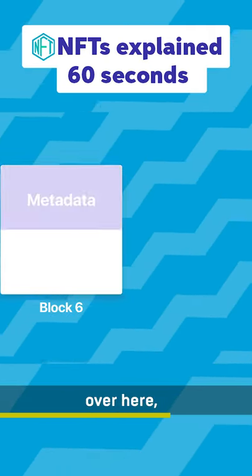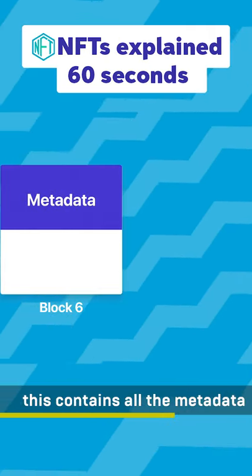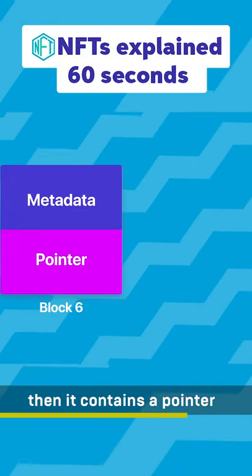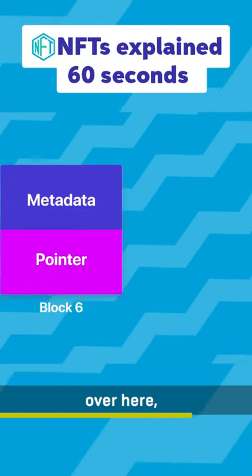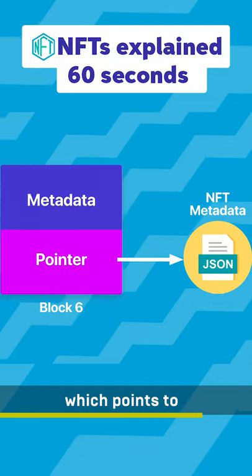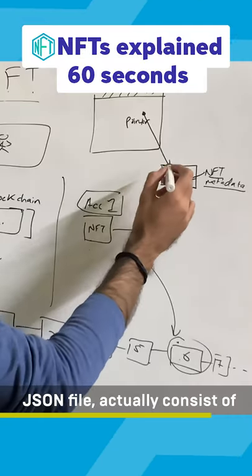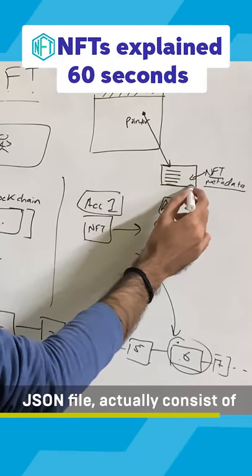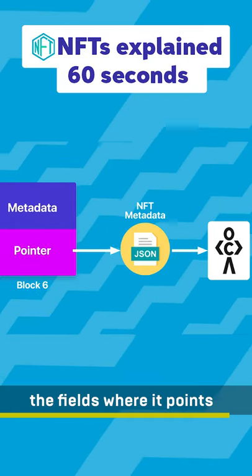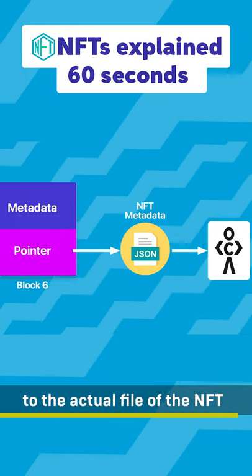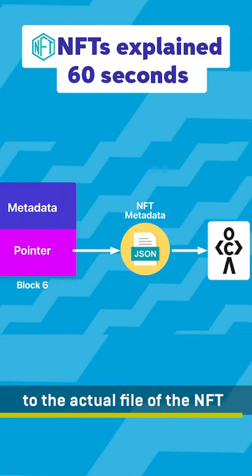If I expand over here, this contains all the metadata, for example. Then it contains a pointer over here which points to this NFT metadata. The JSON file actually consists of the fields where it points to the actual file of the NFT, which is the actual image file.